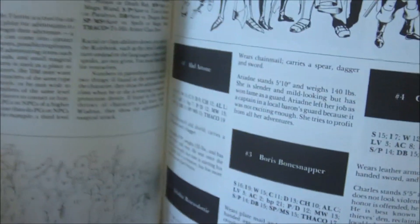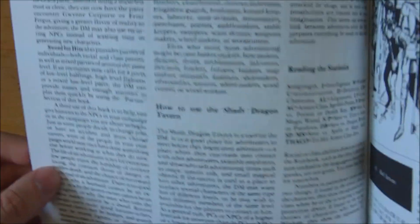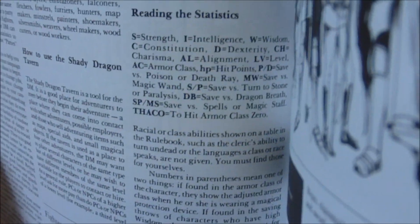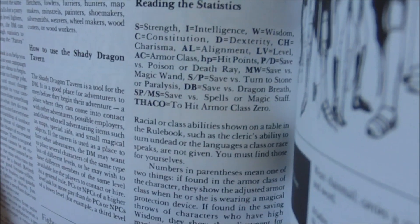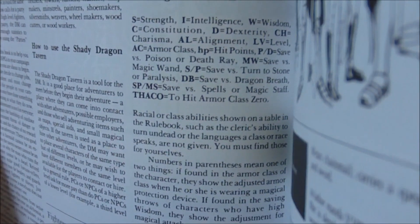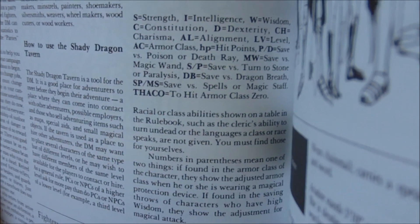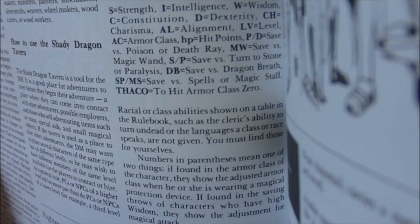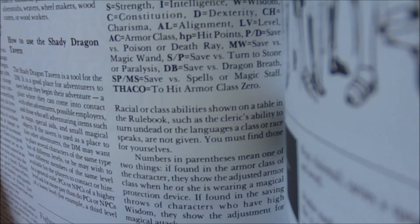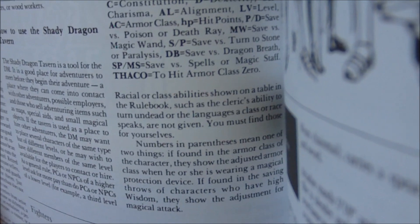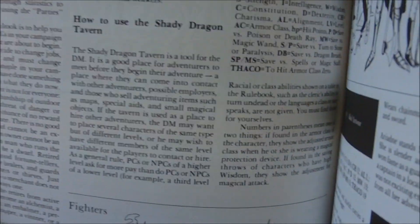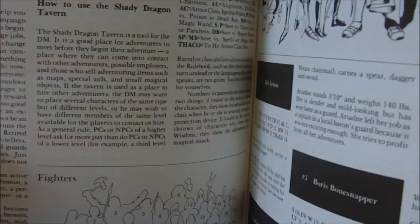When this book says it's filled with characters, it really is. The 'how to use this book' section just goes over how to read the stat blocks — stats, alignment, level, armor class, hit points, saving throws, and thief abilities for the thief class.